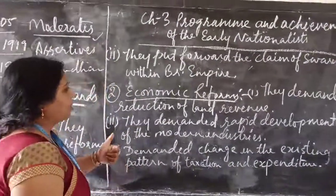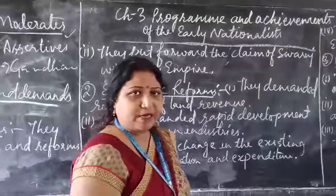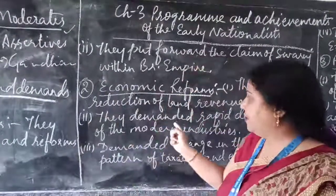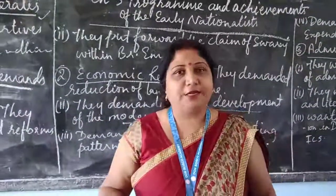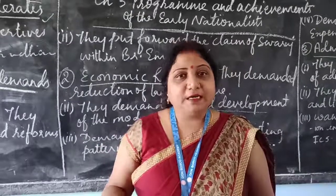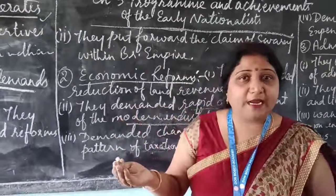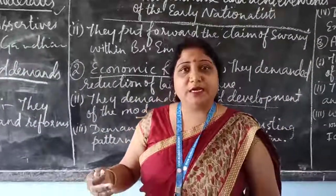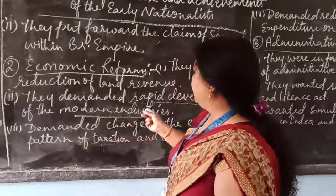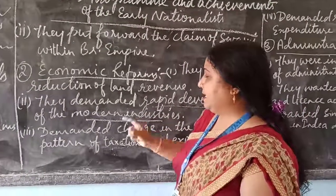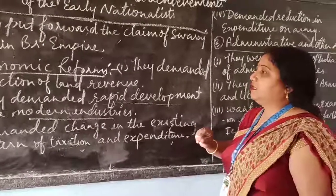Under economic reforms, they demanded reduction of land revenue, which was very high. They also demanded rapid development of modern industries, because the industrial revolution had started in England and raw material was taken from India to Britain. So they demanded that modern industries be set up in India itself. They also demanded a change in the existing pattern of taxation and expenditure.